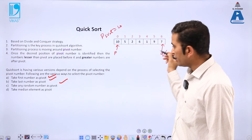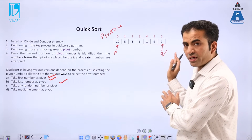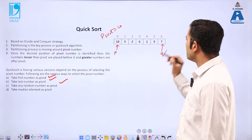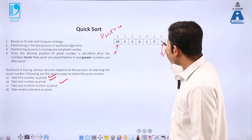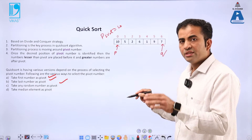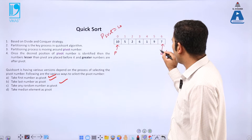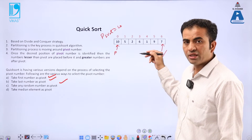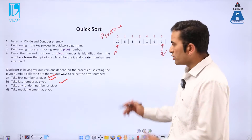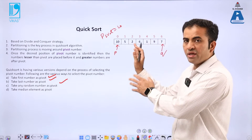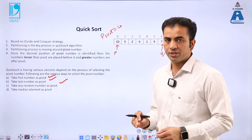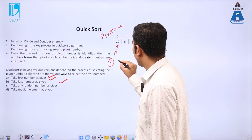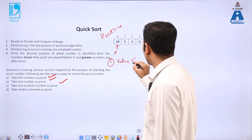Now for q: the right part should contain values greater than the pivot point. If a value is not greater than the pivot, we decrement q by 1. That decrement continues until we find a number greater than 10. Through this increment and decrement process we can easily identify the correct position of the pivot point.